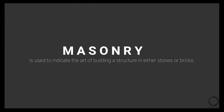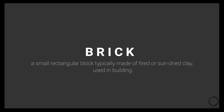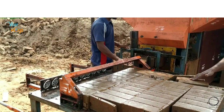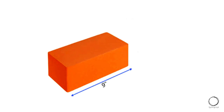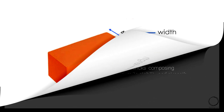The next term is masonry, which indicates the art of building a structure in either stones or bricks. Bricks and stones are the most common materials used for masonry. A brick is a small rectangular block typically made of fired or sun-dried clay. Bricks are also machine-made these days, called wire-cut bricks. The standard brick measures 9 inches by 3 inches by 4 inches — width, height, and length.